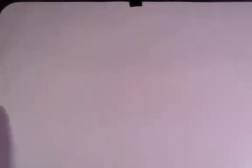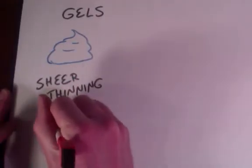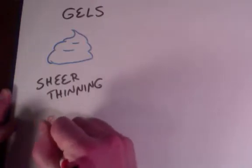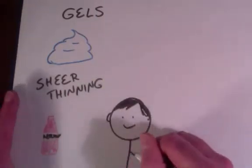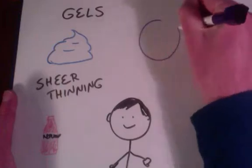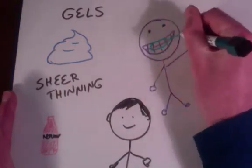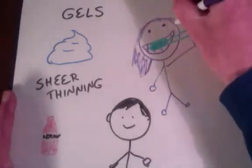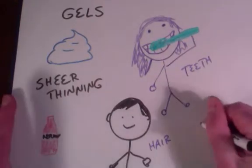The next product form are gels. These are thick products, typically clear, and have a property known as shear thinning. This means they stay thick until you apply a force, which makes them thin and flowable. Anyone who has tried to get ketchup out of a bottle knows what I'm talking about. Gels are used for hair products, body washes, shaving products, and toothpaste. The gel technology is also used to help stabilize things like emulsions. They are made by using a gelling agent, such as an acrylic polymer, a natural gum, or a cellulosic thickener.